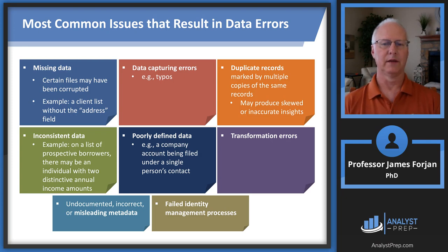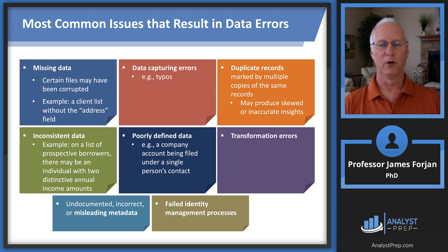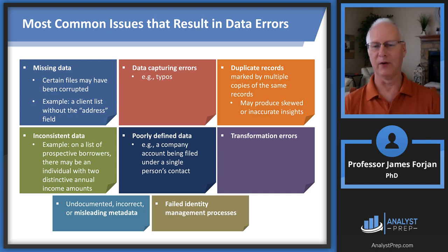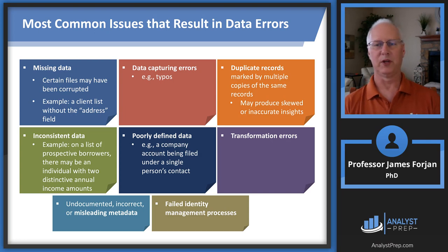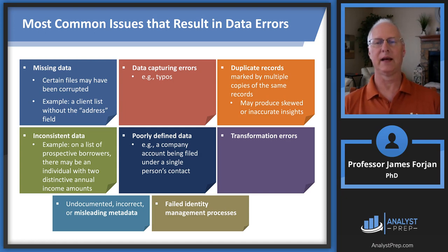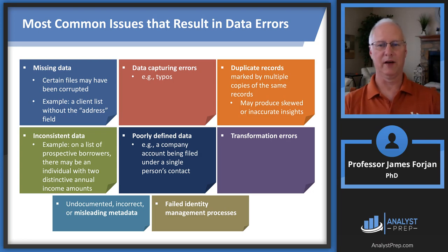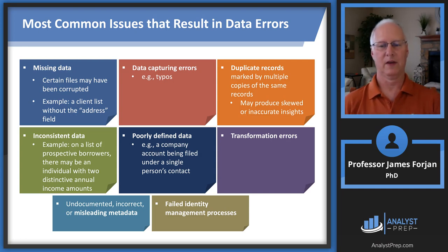Poorly defined data can be a big problem when you ask a client a series of questions and the client isn't quite sure what you're asking or what kind of answer to give — so they write down 'maybe' or something like that. Transformation errors can occur going from a 1 to an A from one spreadsheet to another. Undocumented, incorrect, or misleading metadata is also an issue — metadata is a summary of all the other data, and when we collect and summarize it, we could make errors. And then there's a failed identity management process.